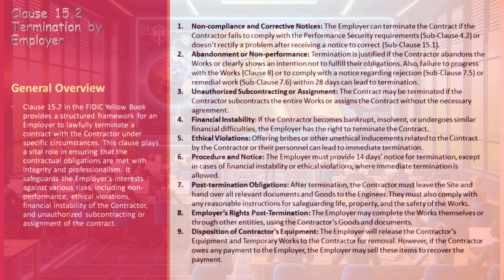Unauthorized Subcontracting or Assignment: The employer may terminate the contract if the contractor unlawfully subcontracts the entire works or assigns the contract without necessary approval. Financial Instability: Bankruptcy, insolvency, or similar financial difficulties faced by the contractor allow the employer to terminate the contract. Ethical Violations: Any form of bribery or unethical inducements related to the contract is a serious offense warranting immediate termination.